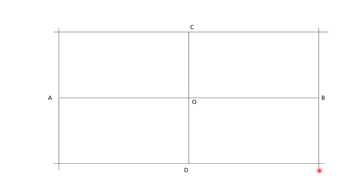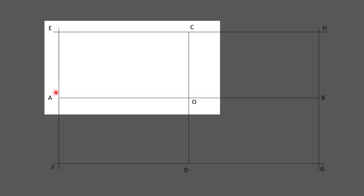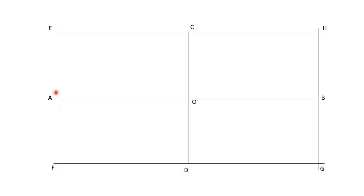Once we get the rectangle, we will name the corners as E, F, G and H. Now you can see we have four small rectangles, but right now we are going to focus on the top-left rectangle, which is E, A, O, C. In that rectangle, we are going to divide its smaller and longer edges into equal and the same number of parts.